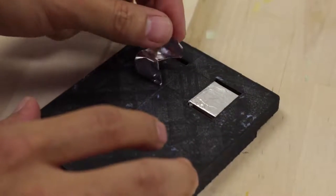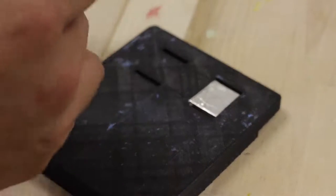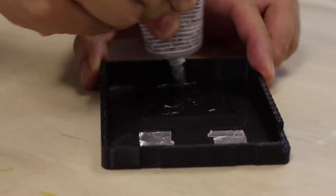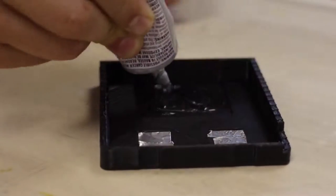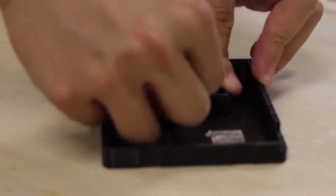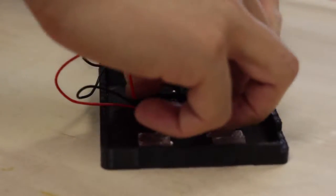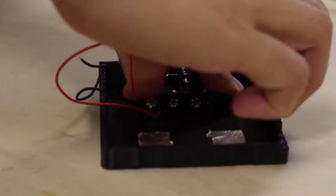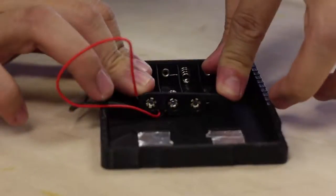Next we're going to apply some e6000 to the case itself and then put on our battery pack here. I'm probably using a little bit more than you should, and then the pack is going to fit in pretty snugly. Remember to hold it for at least a little bit to let it set, and you may want to hold it overnight.